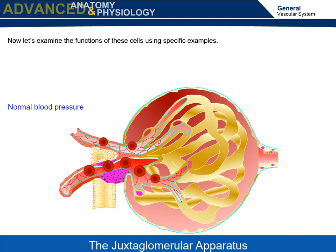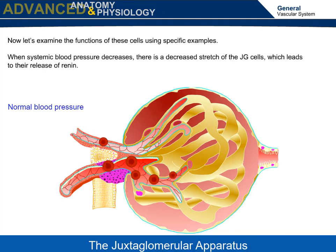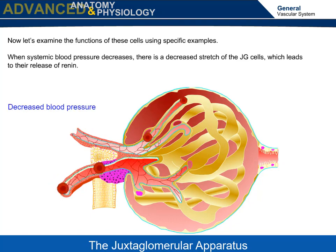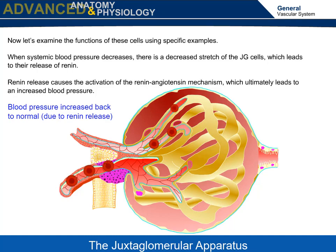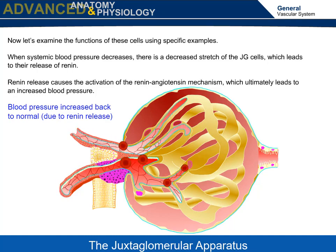Now let's examine the functions of these cells using specific examples. When systemic blood pressure decreases, there is a decreased stretch of the JG cells, which leads to their release of renin. Renin release causes the activation of the renin-angiotensin mechanism, which ultimately leads to an increased blood pressure.